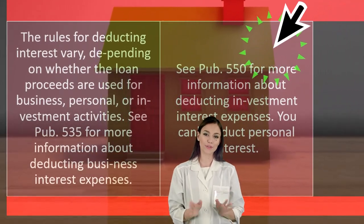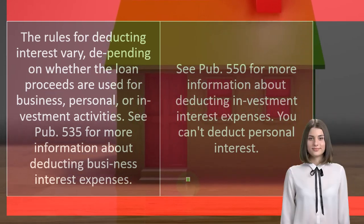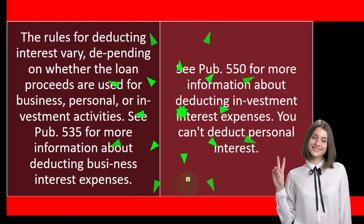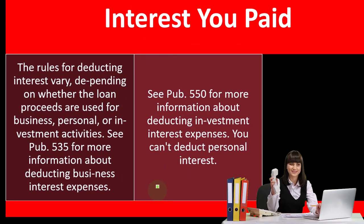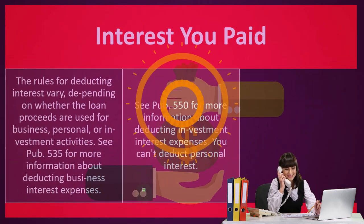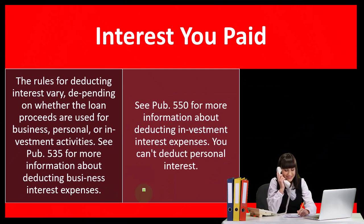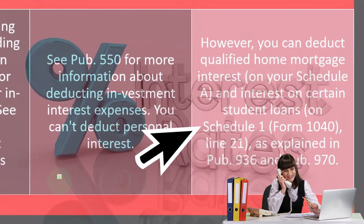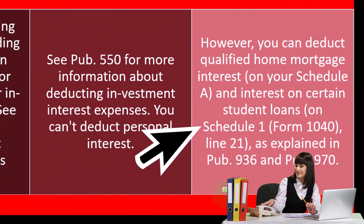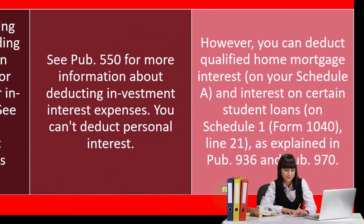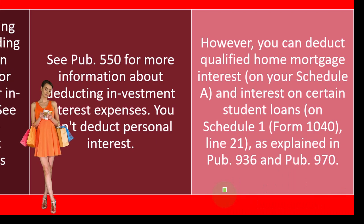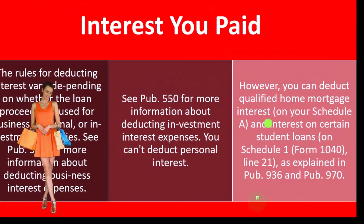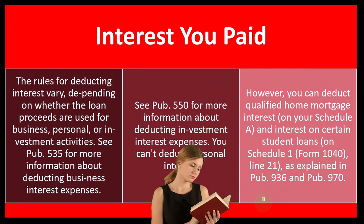See Publication 550 for more information about deducting investment interest expenses. Investment interest comes into play more for well-off individuals, but it makes sense from a normal deduction standpoint — if you borrowed money to make an investment, the interest on that borrowed money is the cost of renting that money. You can deduct qualified mortgage interest on Schedule A, and interest on certain student loans on Schedule 1. Student loans are an above-the-line deduction, so even if you're not able to itemize, you might still take that deduction. Generally, for itemized deductions — which require clearing the standard deduction — that's the home loan interest, with qualifications on how much you can deduct.